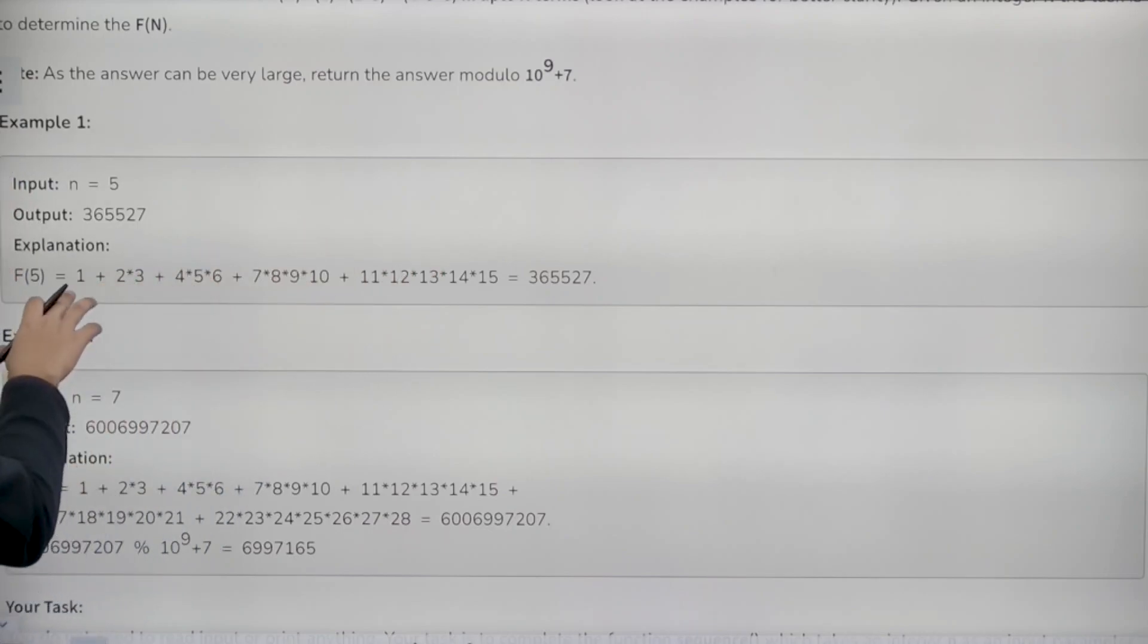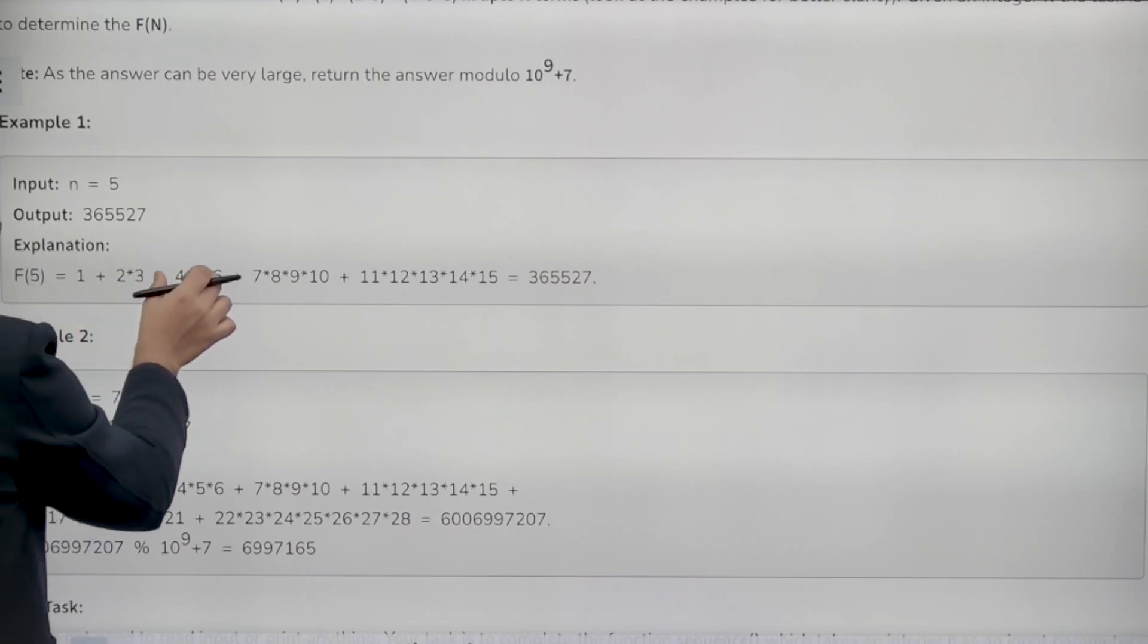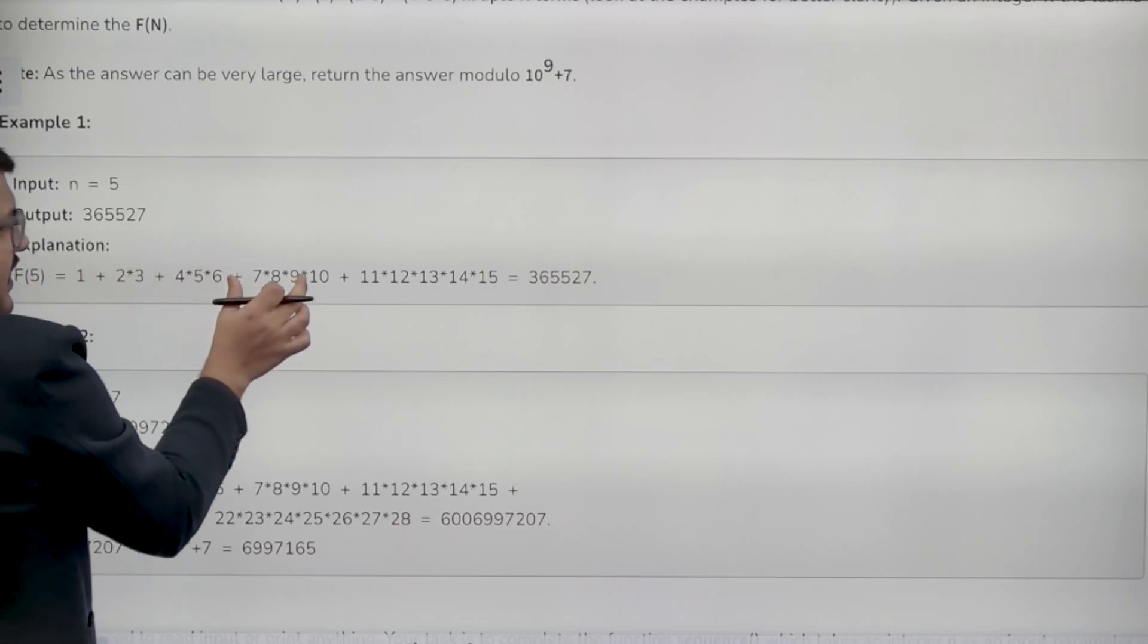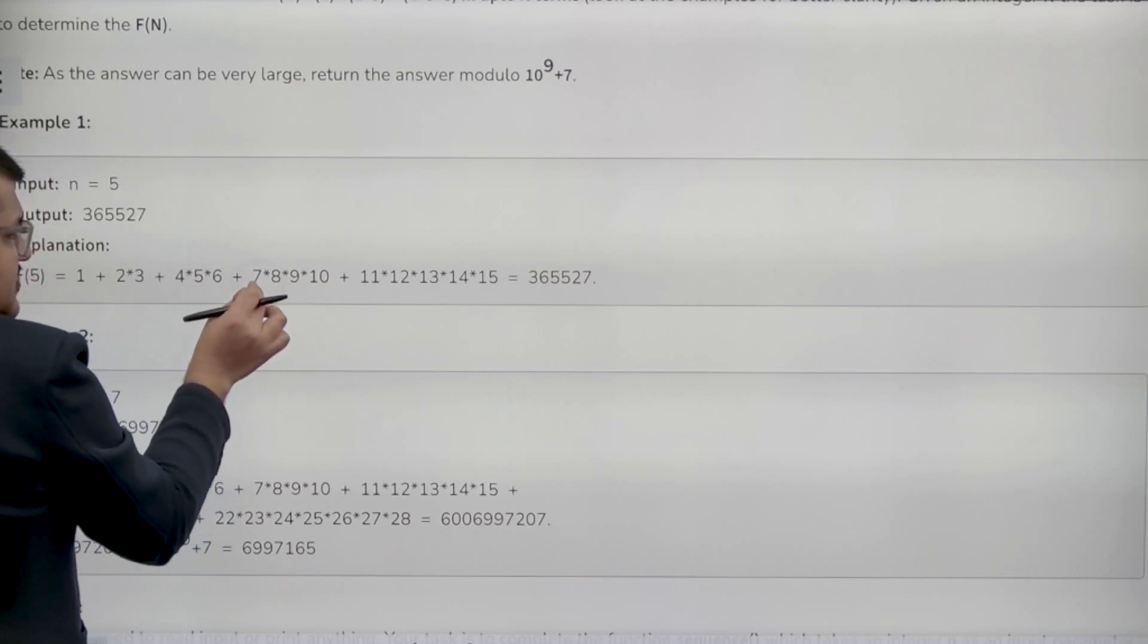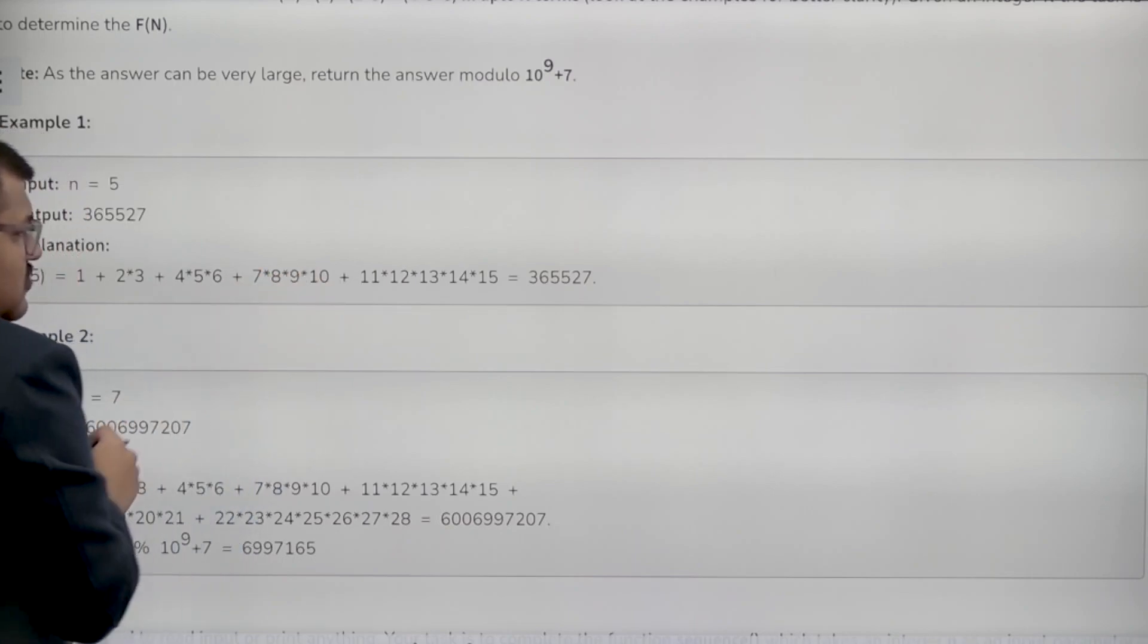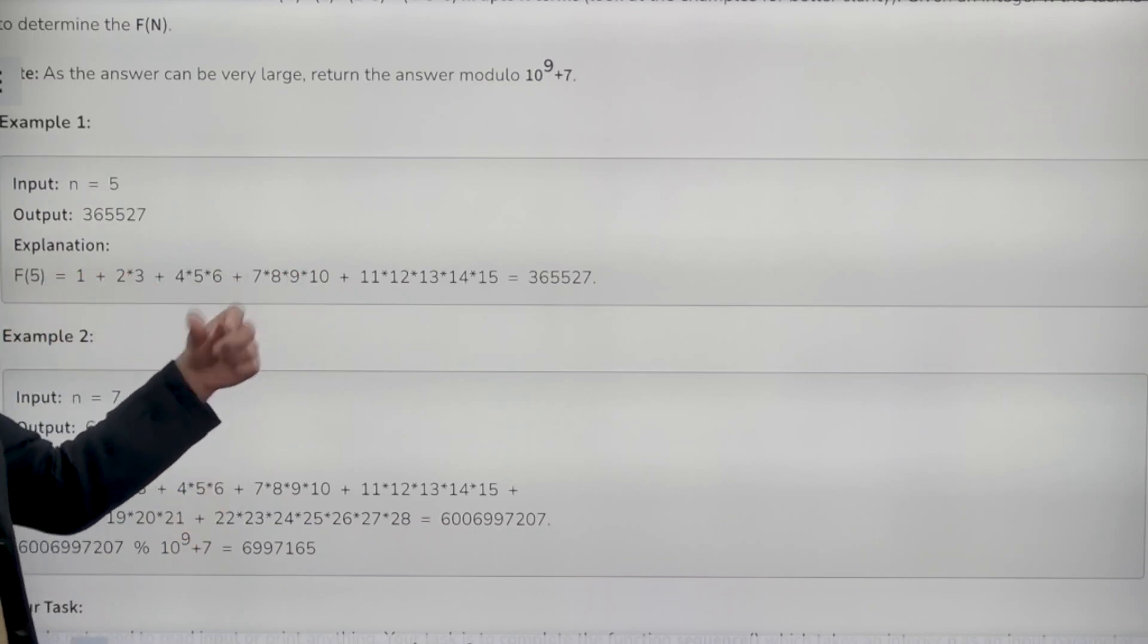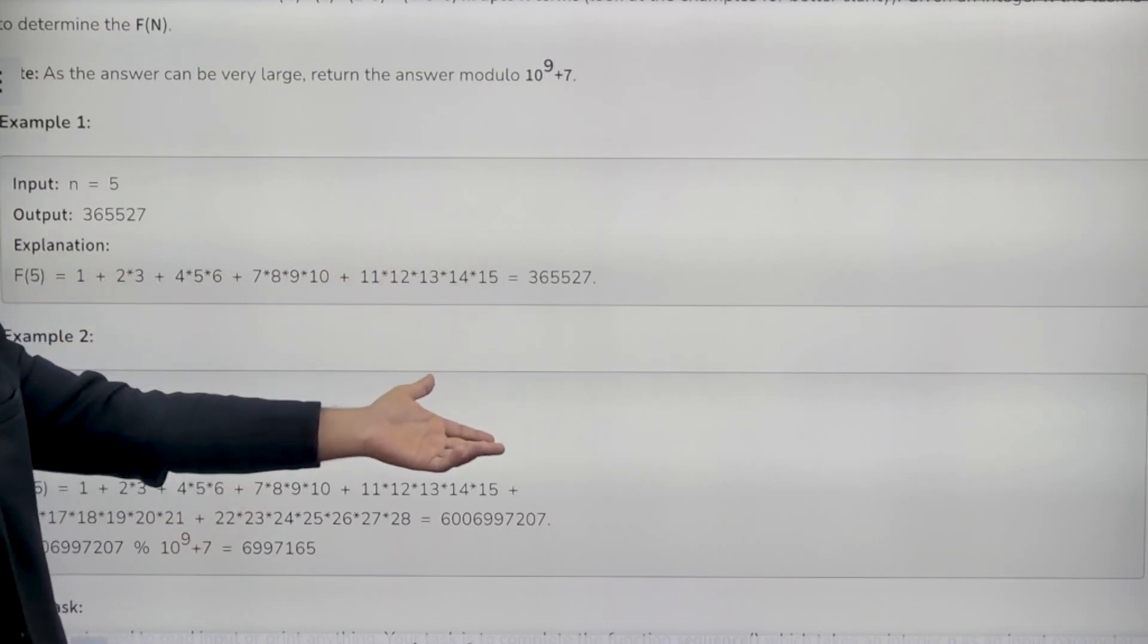And how are the terms? First contains 1, second contains 2 elements, that is 2 into 3. Third contains 3 elements starting with 4, so it is 4 into 5 into 6. The next contains 4 elements starting with 7, so 7 into 8 into 9 into 10. So, the elements are consecutive in order 1, 2, 3, 4, 5, 6, 7, 8, 9, 10, 11 to 15 and so on.